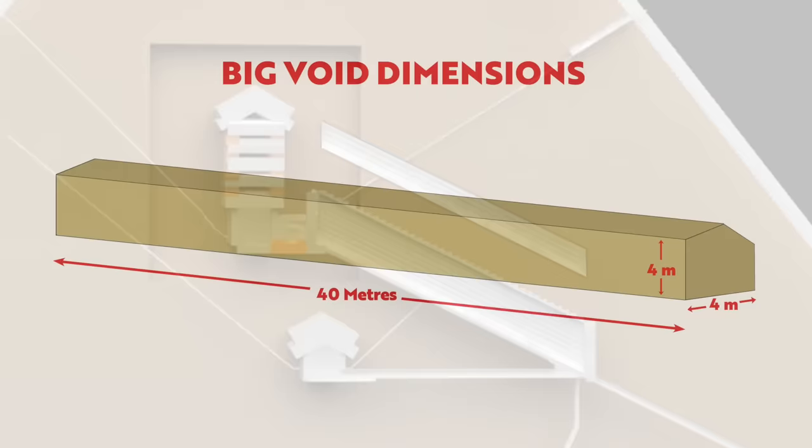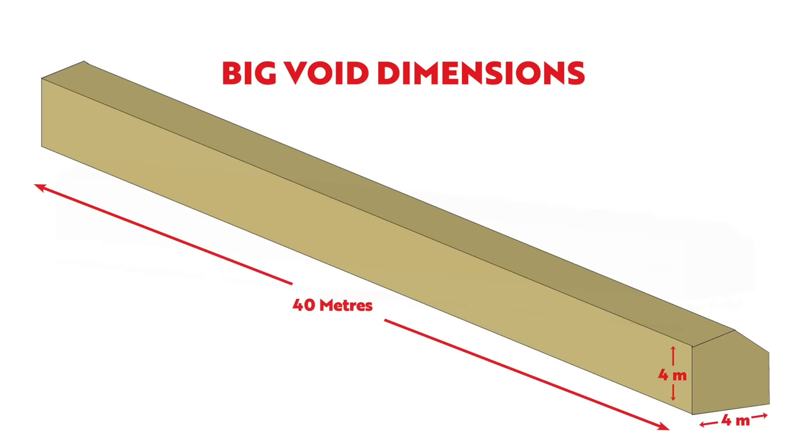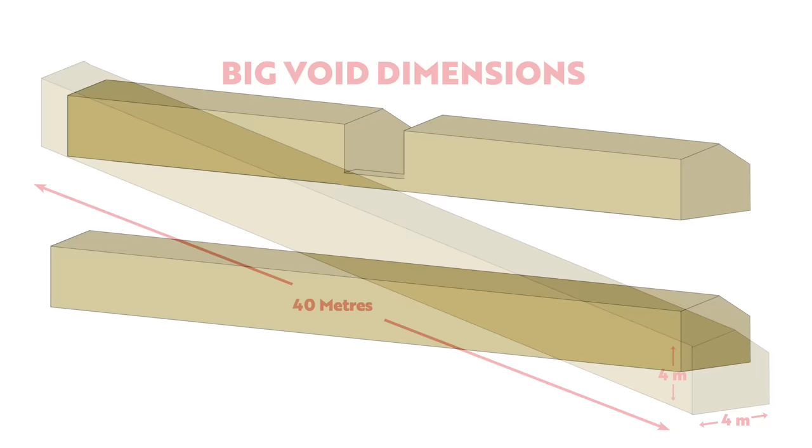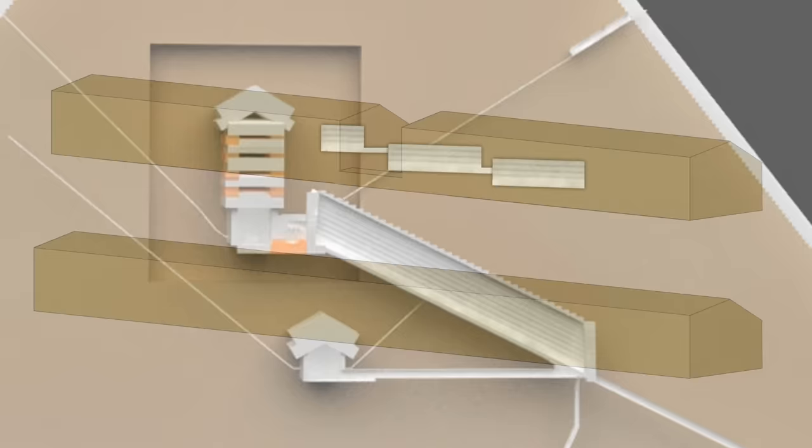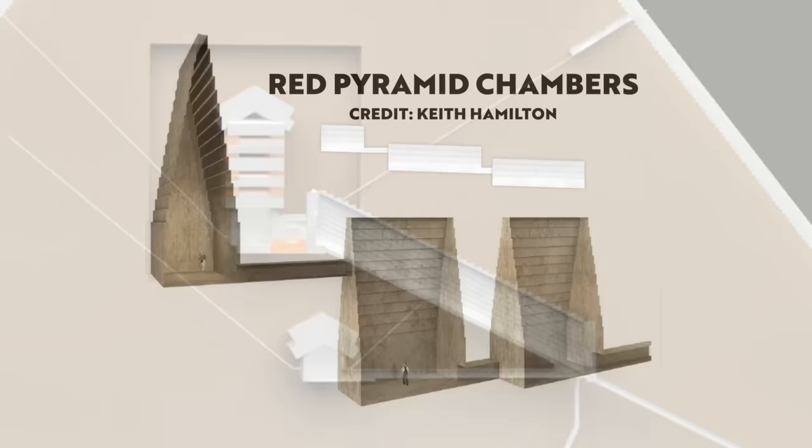Morishima finds it hard to imagine one single room measuring 4 meters by 4 meters by 40 meters. It would be an enormous space. And so he's in the mindset it's more likely to be two chambers side by side. I personally think it's probably three, maybe like the internal layout of the Red Pyramid.